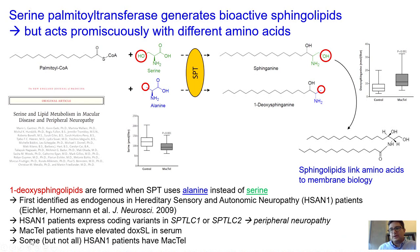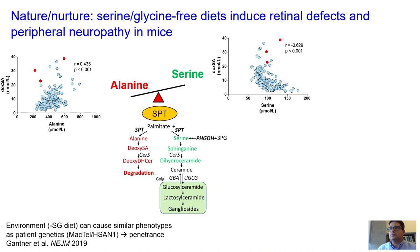We noted that clinically some, but not all, HSN1 patients also have MacTel. Looking at the broader cohort mixing controls and patients, we observed a strong correlation between alanine and deoxysphingolipid levels, and a negative correlation with serine. HSN1 patients appear as outliers — they always synthesize high levels of deoxysphingolipids, even in the presence of high serine levels.